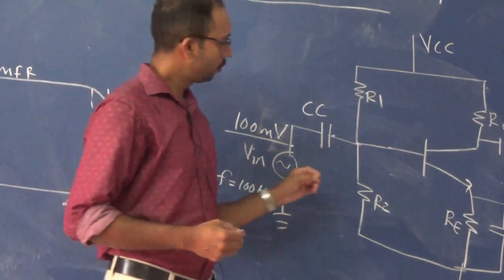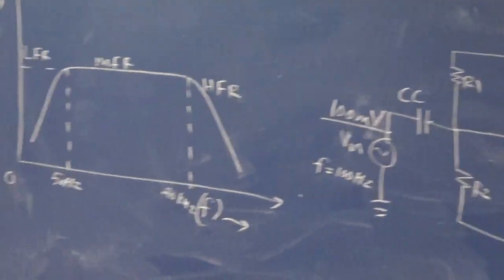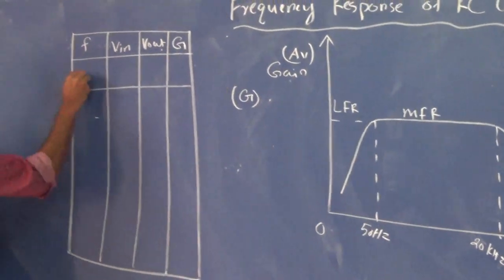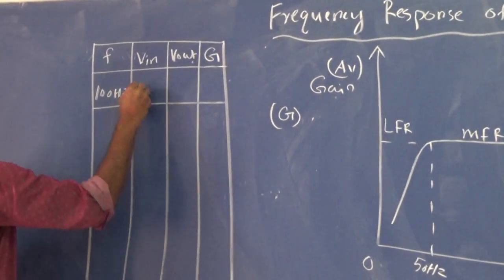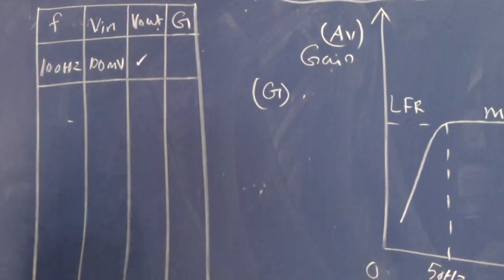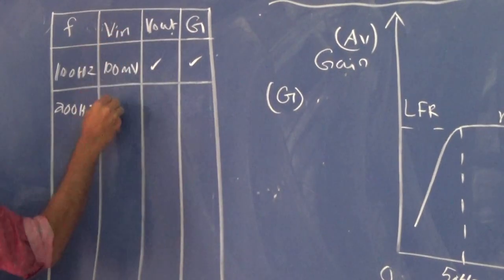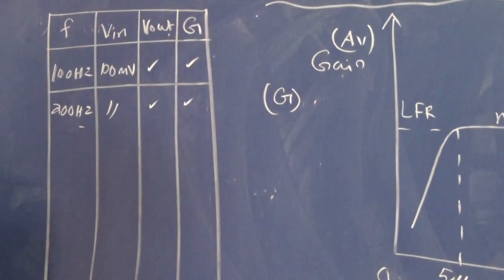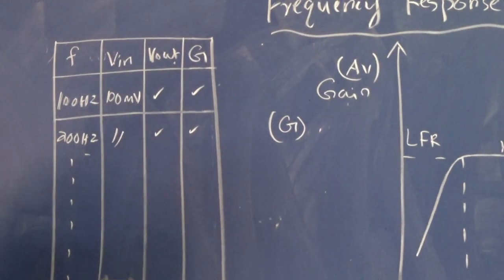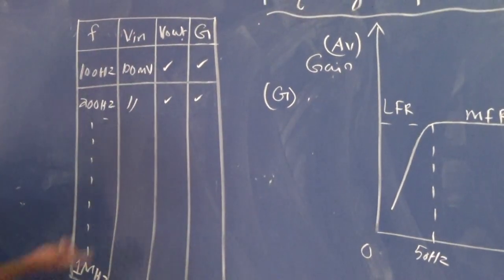We can do an experiment: apply an input voltage of 100 millivolts, set the frequency to 100 Hz, and record the output voltage, then calculate the gain. Then change the frequency to 200 Hz with the same input voltage, calculate the output voltage and gain. Continue this experiment up to some megahertz value — you will get a gain value corresponding to each frequency variation.